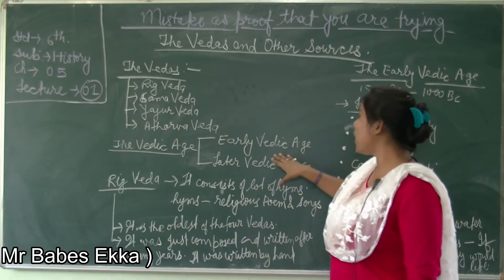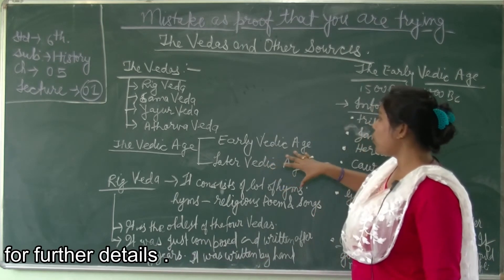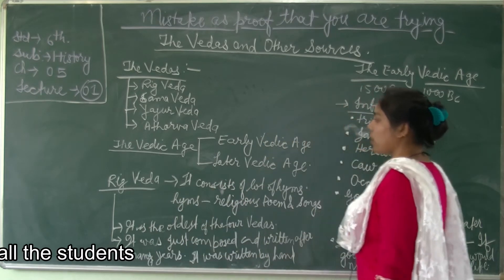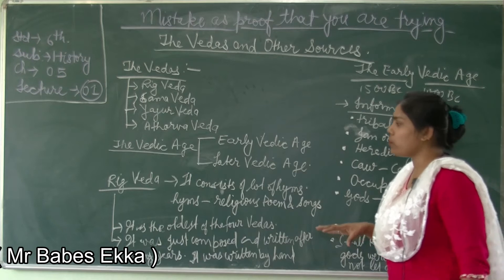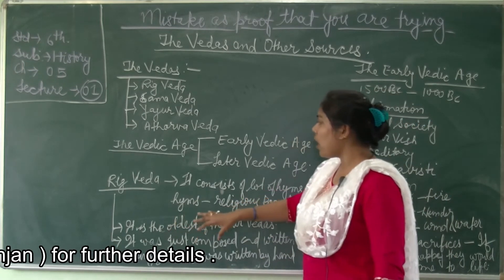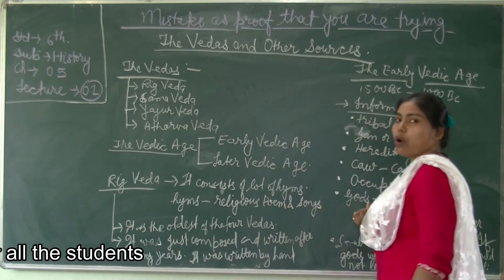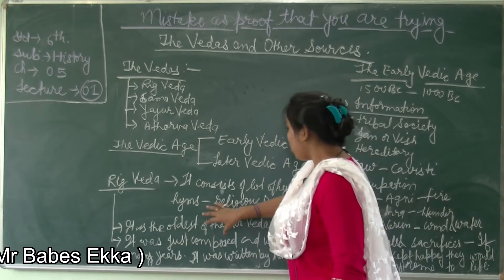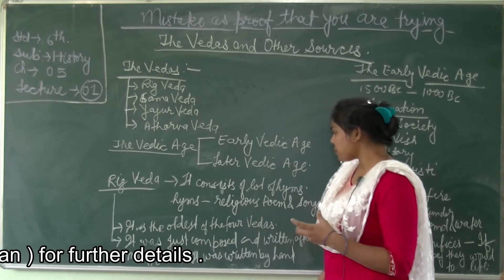The Vedic Age is further divided into two periods: the Early Vedic Age and the Later Vedic Age. In the Early Vedic Age, the Rig Veda was written — it is the oldest book in our history. The Rig Veda gives us a lot of information about the Aryans and consists of many hymns or suktas. 'Sukta' means 'well said,' and hymns are religious poems or songs written to praise and pray to the gods and goddesses.